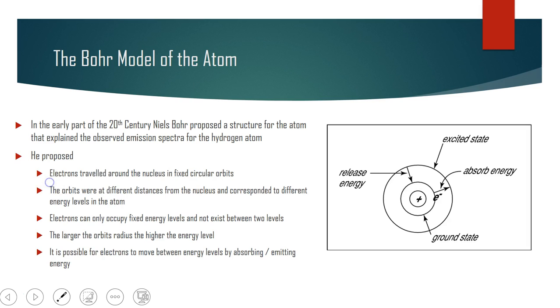These orbits corresponded to different energy levels that the electrons can inhabit. The larger the orbit, the larger the radius, the higher the energy level. Electrons in shell 3, which is further from the nucleus, would have a larger orbit and would be at a higher energy. It's possible for electrons to move between these energy levels by absorbing or emitting energy. As an electron absorbs energy, it moves to a higher energy level, and then it re-emits that energy when it goes down.